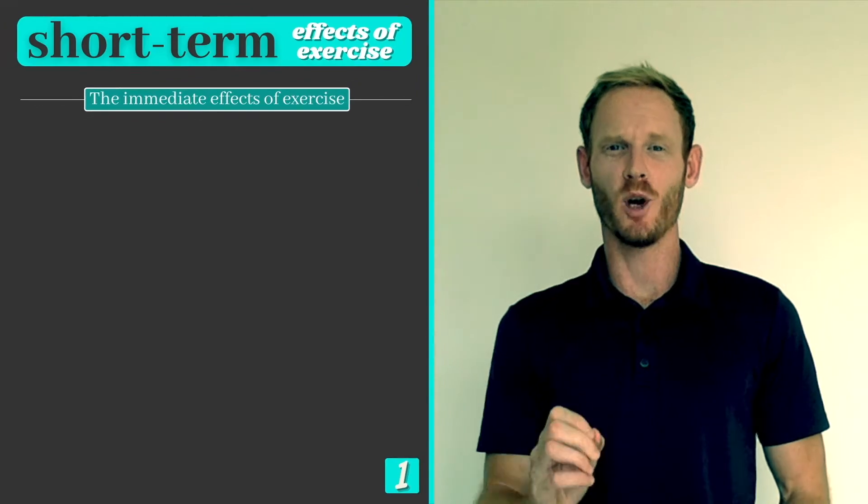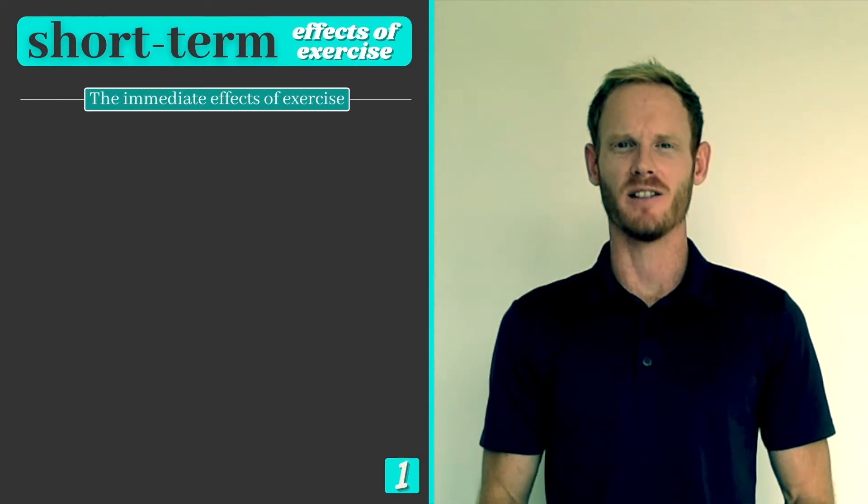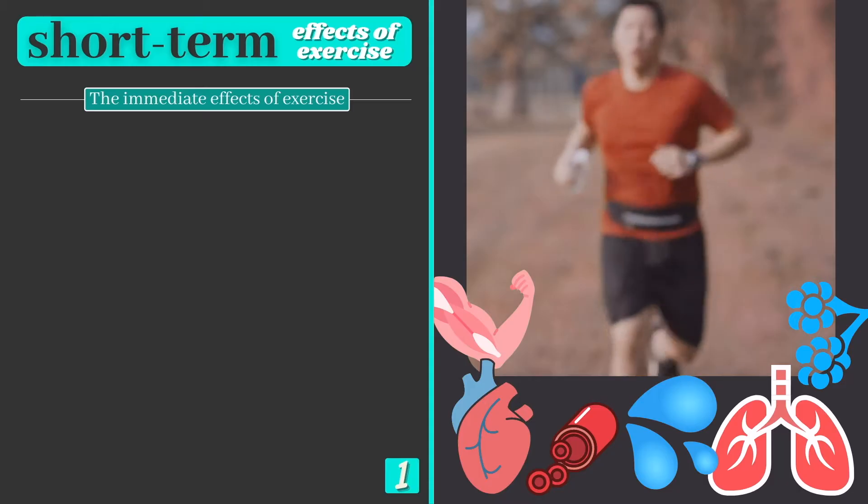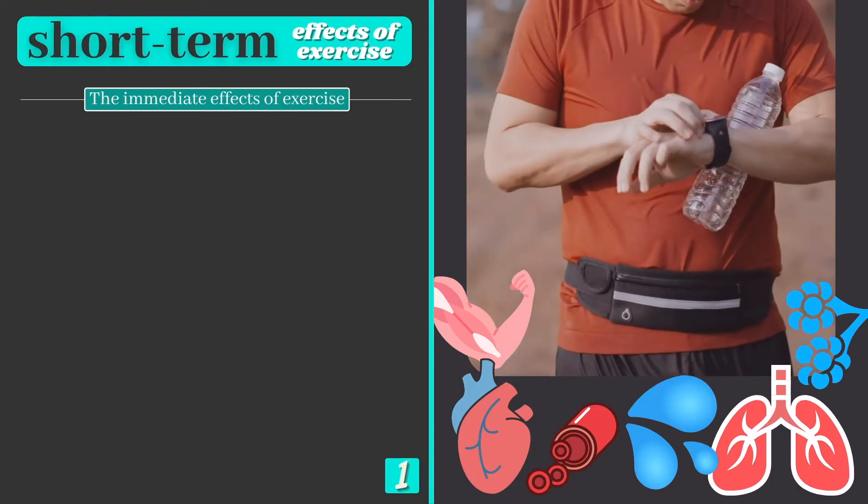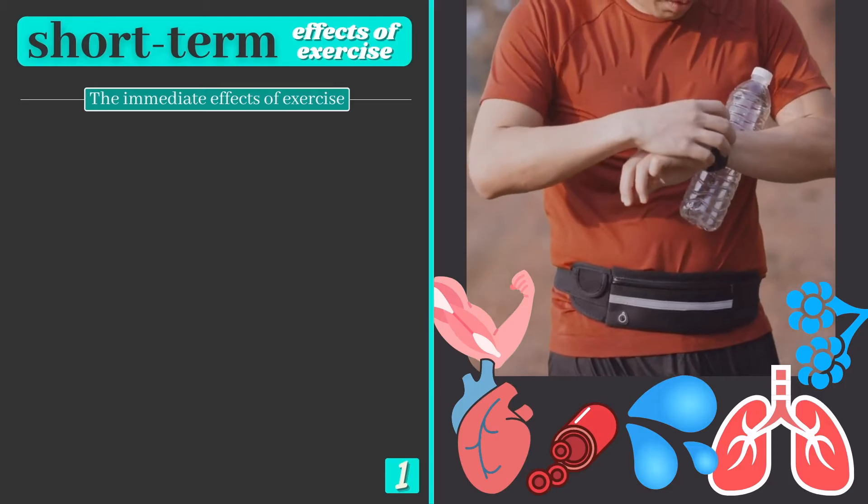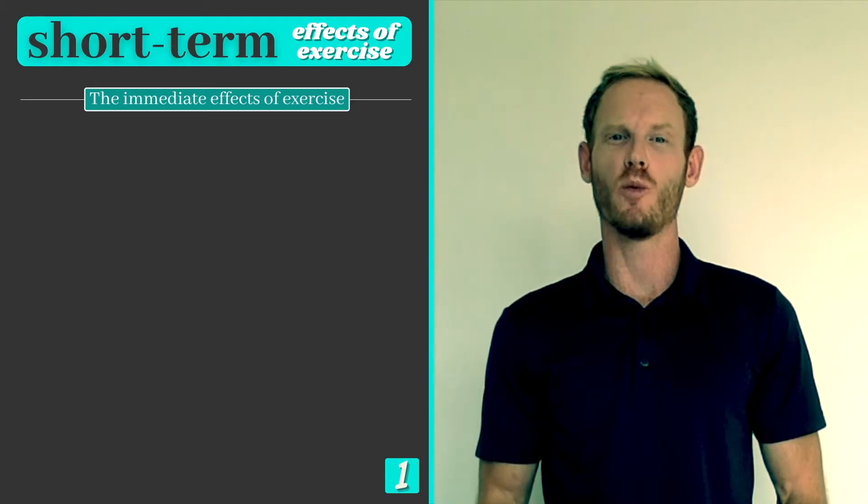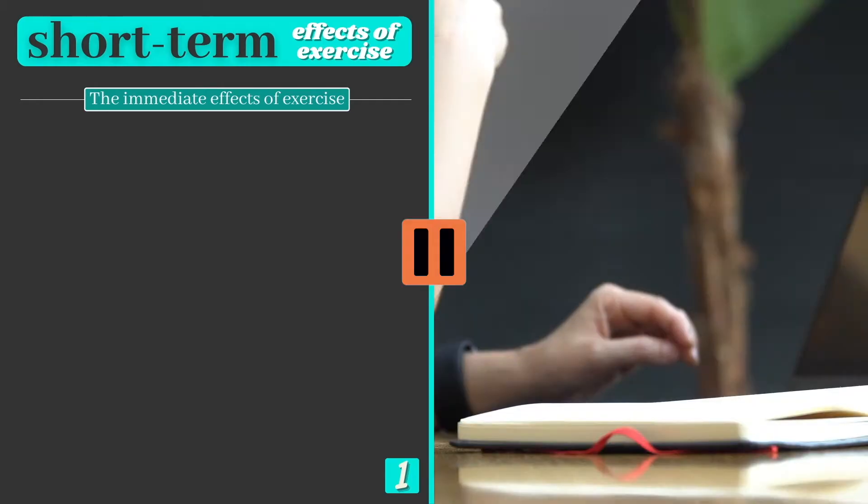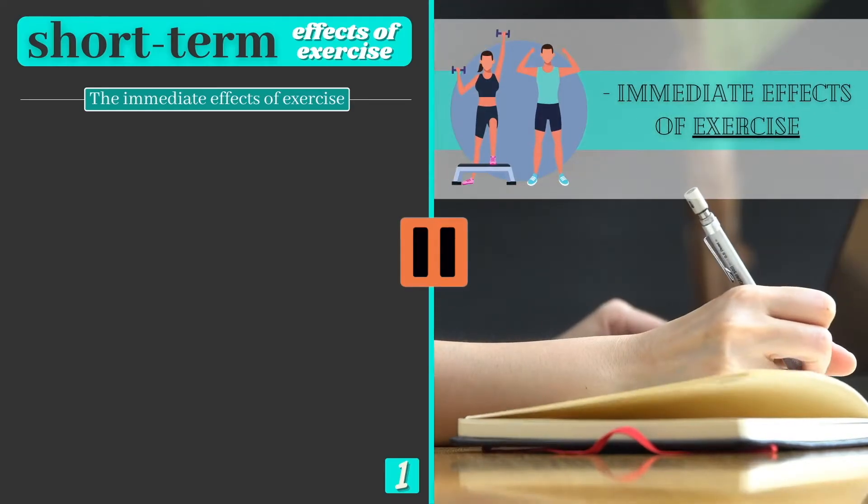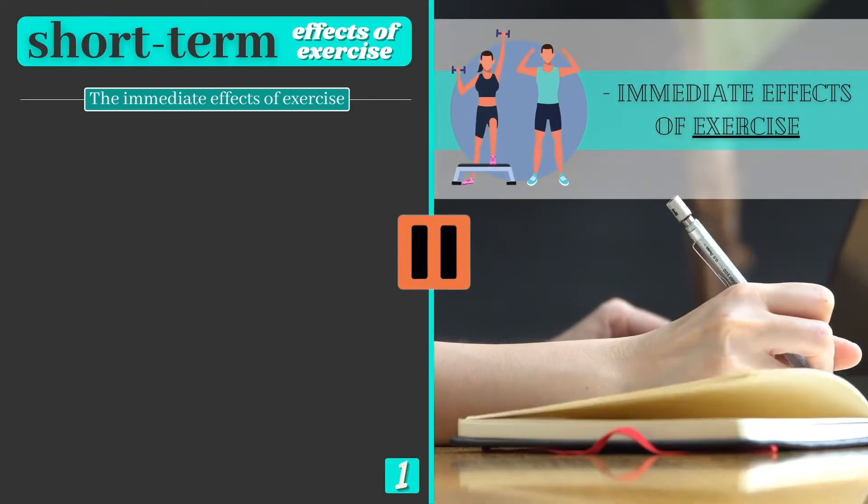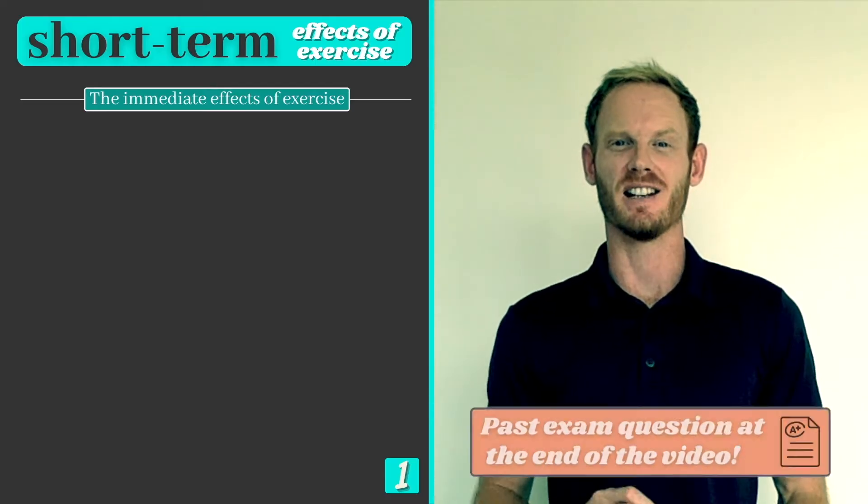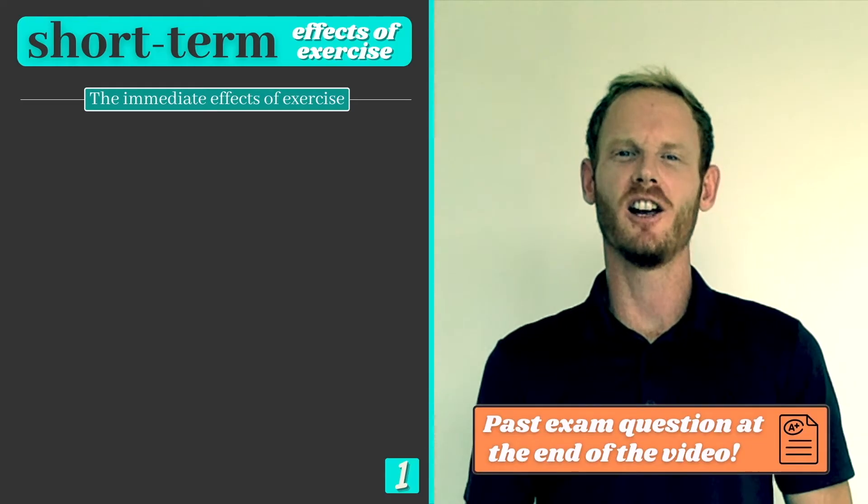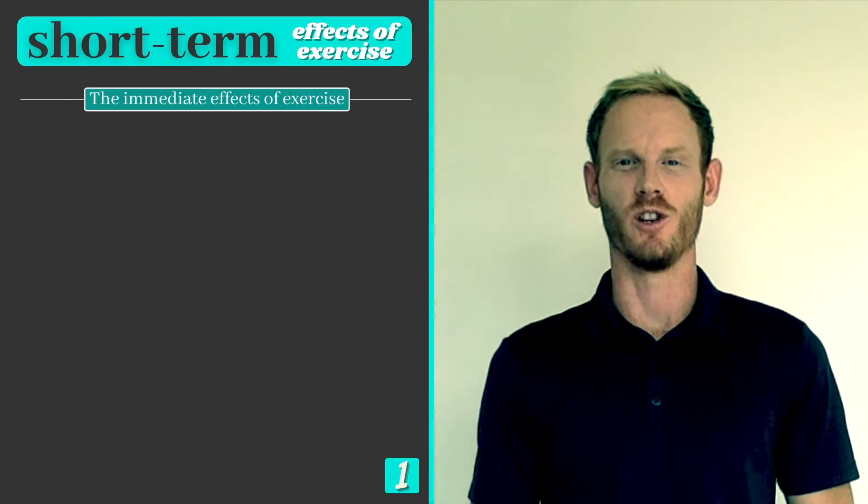We're all aware that the body adapts in response to exercise but what are the immediate effects of exercise on the body and what are the physiological reasons behind these changes? Many of the effects that we'll explore today can be identified by simply observing how our own bodies respond to exercise. You can probably think of several already so why not pause the video now and make a list of what you already know. There are eight short-term effects that you need to be able to name and describe and we'll tackle all three learning objectives together as we work through the list.